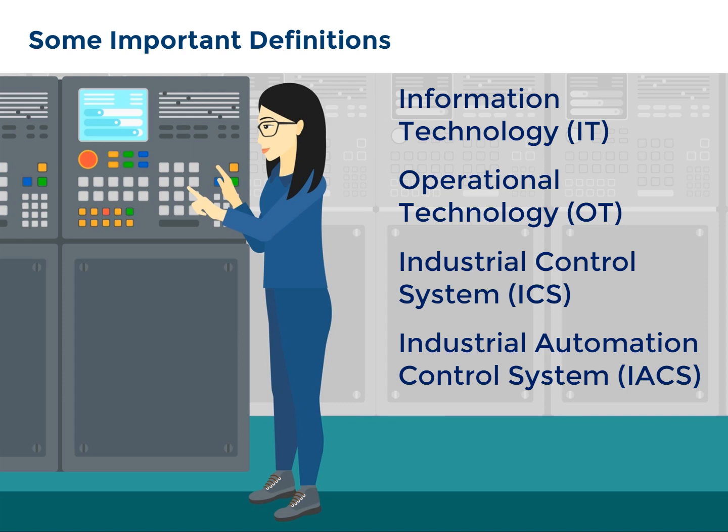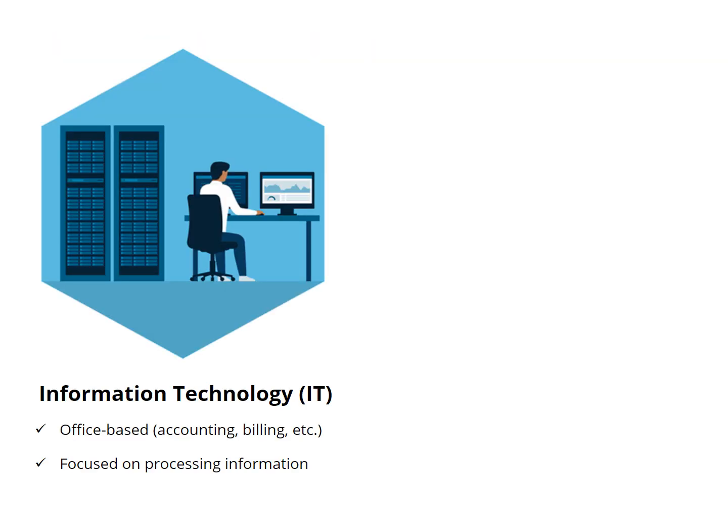To get a further explanation of IACS, I recommend looking at an MLM specifically devoted to definitions — MLM 014A on IT, OT, and IACS definitions. IT for me is what happens in your office: accounting, billing, or the administration part of your enterprise. The focus there is on the processing of information and protecting the confidentiality, integrity, and availability of the information vitally needed to administer the enterprise.